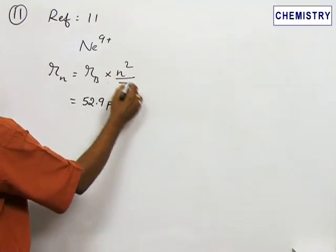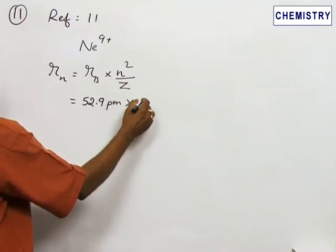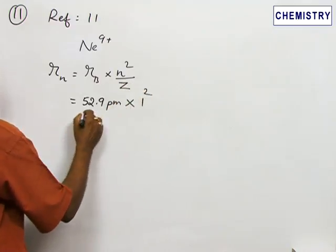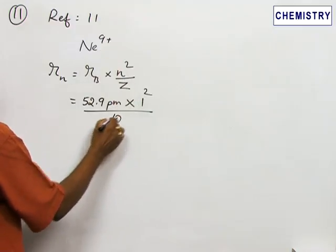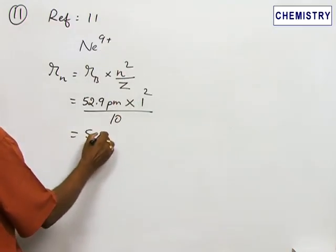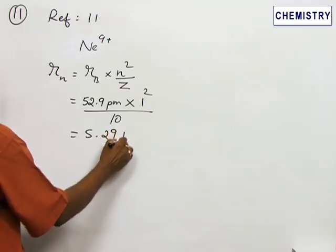The n² value for the first orbit is 1², divided by z. The nuclear charge of neon is 10. On solving, we get 5.29 pm.